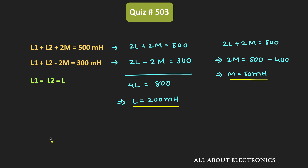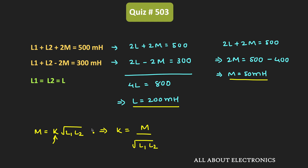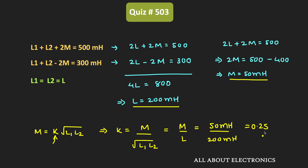For mutually coupled circuits, the mutual inductance M is given by K times the square root of L1 times L2, where K is the coupling coefficient. So K = M divided by the square root of L1 times L2. Since both L1 and L2 are equal, K = M divided by L. With M = 50 mH and L = 200 mH, the coefficient of coupling K is equal to 0.25.